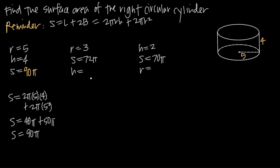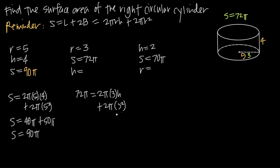What about when we're given the radius and the surface area and need to find height? In this case, the radius equals 3 and the surface area is 72π, and we need to find height. We plug into our formula: 72π equals 2π times the radius 3 times h, plus 2π times 3 squared. Simplifying: 2 times 3 is 6, giving 6πh, and 3 squared is 9, times 2 is 18, giving plus 18π.